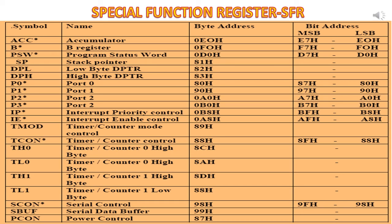Special function registers in the microcontroller 8051. The special function registers are shortly called as SFR. There are 21 special function registers in microcontroller 8051. The address locations allocated for the special function registers are from 80H to FFH. Some of the address locations are not used and are reserved for the next families of 8051.